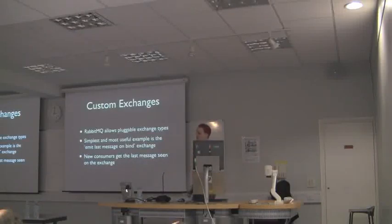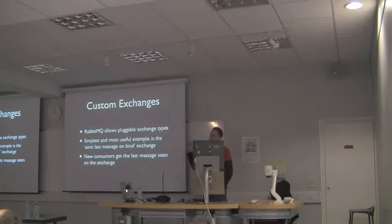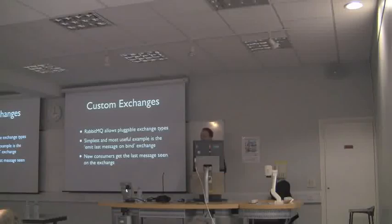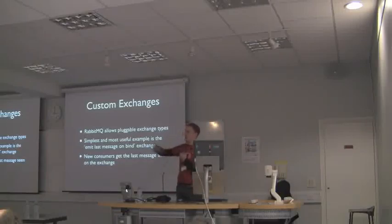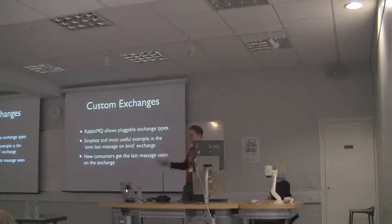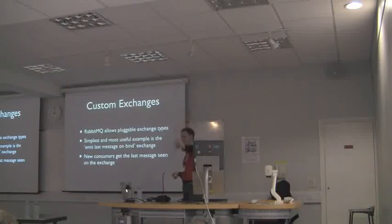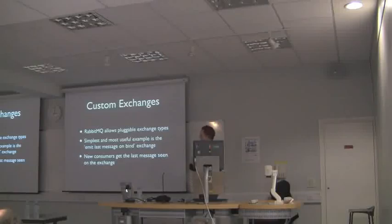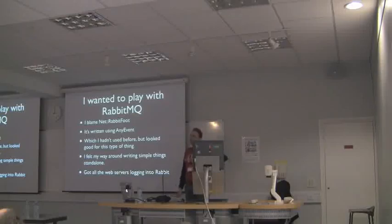You can also get custom pluggable message exchanges. The most useful example is an exchange that keeps the last message that was sent to it — whenever a new client connects, it gets the last message that came down that queue. Which is really useful if you have an application pushing updates out to message queuing, say saving application state every 30 seconds. Any client who wants to catch up can get the current state and then start receiving updates. There are loads of really cool things you can do with RabbitMQ and AMQP.